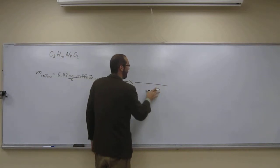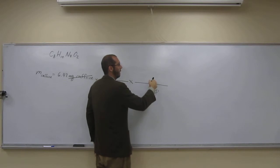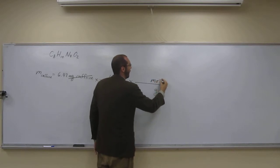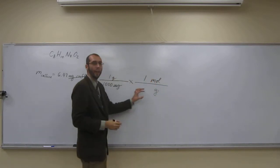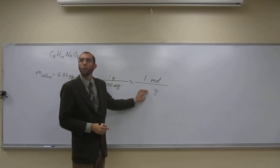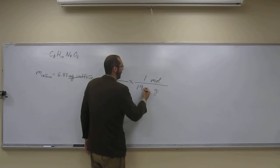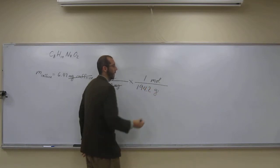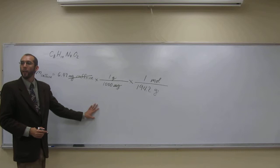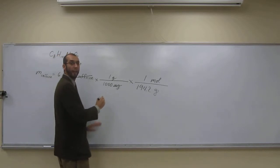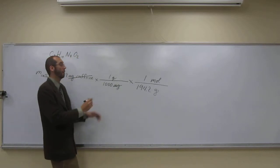So what am I going to put at the bottom? Grams. And up here? Moles. And it's going to be one mole. We calculated the molar mass in the last problem. What was that molar mass? 194.2 grams. Is everybody okay with that? Any questions?